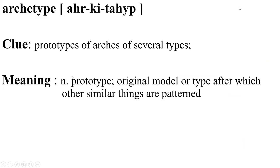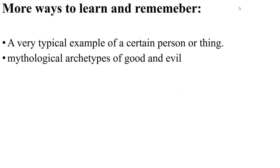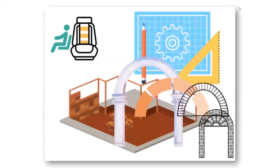Archetype. Clue: prototypes of arcs of several types. Archetype means a prototype, original model, or type after which other similar things are patterned. It also means a very typical example of a certain person or thing. It also means mythological archetypes of good and evil. Visualize arcs of different types — archetypes — and the blueprint or prototype of the design.